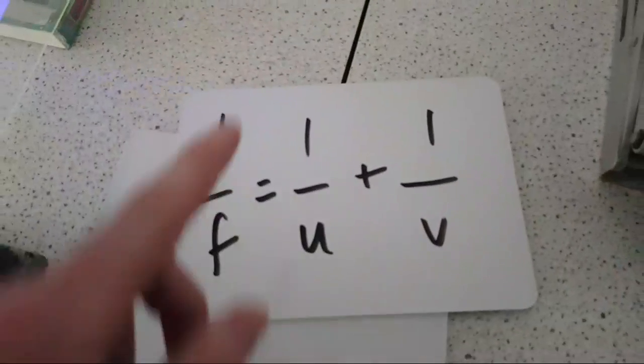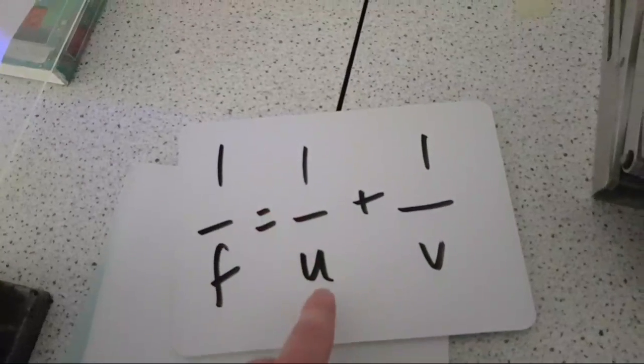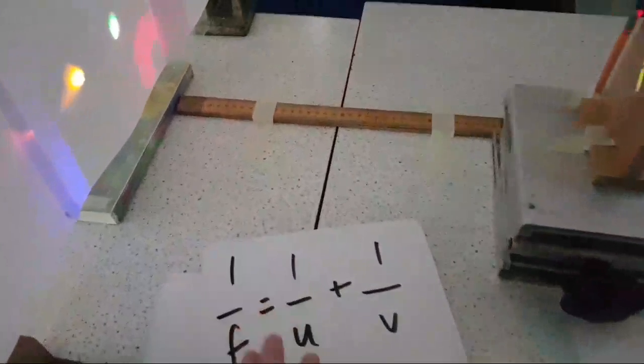One over u is obviously - u is the distance here between object and lens, v is between lens and the screen. This is the equation in the formula sheet.